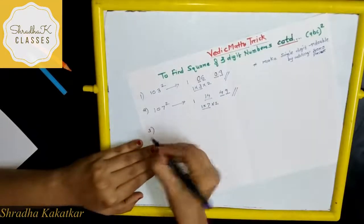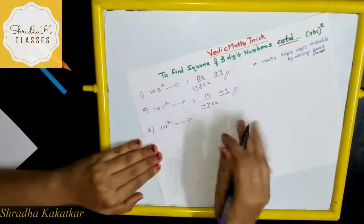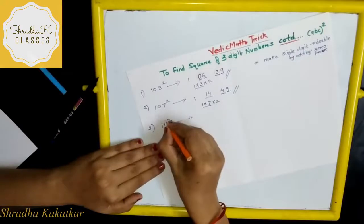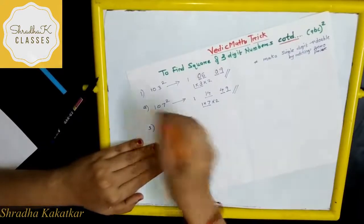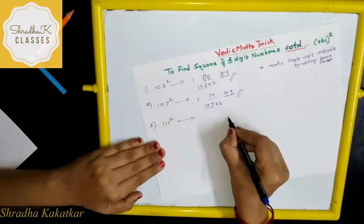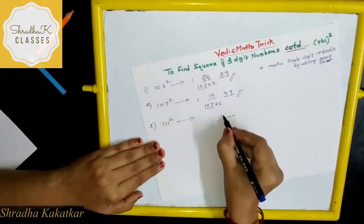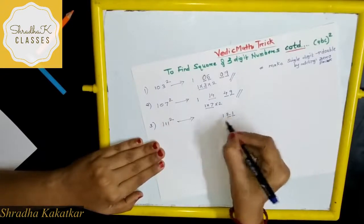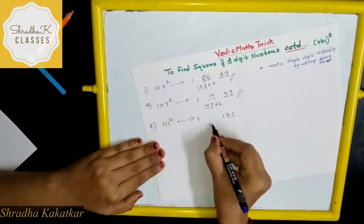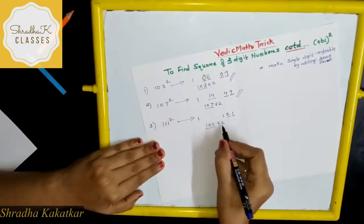Let's take 111 square. So now what you will do is 11 square and 1 square. Two dashes represent two digits, right? So 11 square is 121, so 1, 2, 1. 1 square is 1.